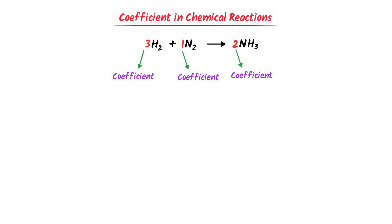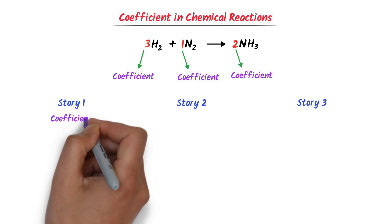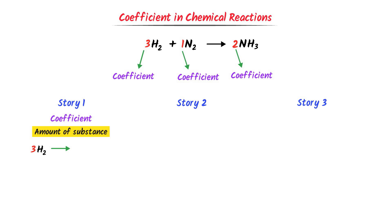Firstly, the coefficients represent the amount of substances. For example, the coefficient 3 of hydrogen gas shows 3 moles of hydrogen gas. The coefficient 1 of nitrogen gas represents 1 mole of nitrogen gas, and the coefficient 2 of NH₃ represents 2 moles of NH₃.